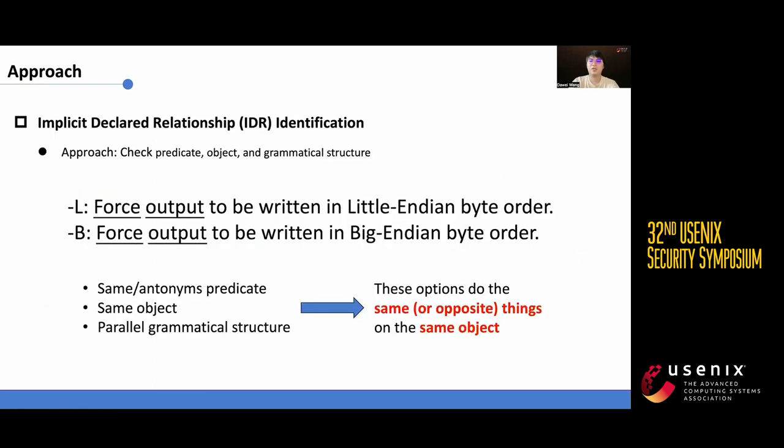For implicit relationship declarations, we employ heuristic rules for judgment. Based on our findings, two sentences with implicit relationship declarations often share the same object and have the same or opposite actions on the same object. This suggests that these two options perform the same or opposite actions on the same object, indicating a conflicting relationship.